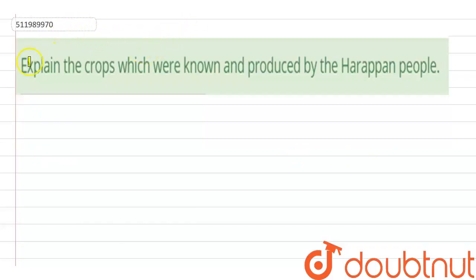So the question is: explain the crops which were known and produced by the Harappan people.